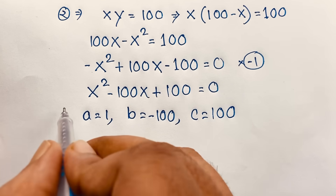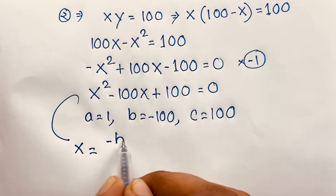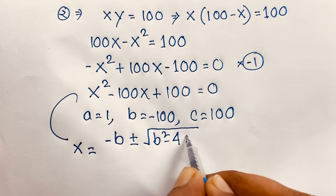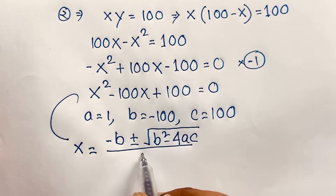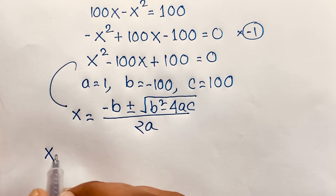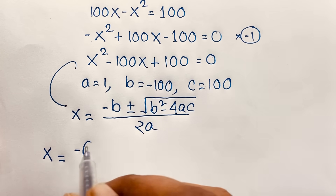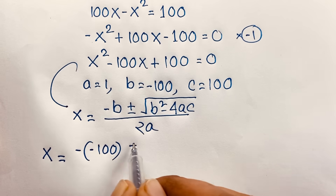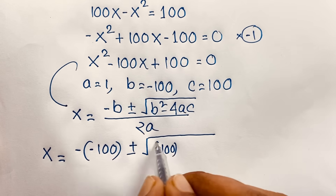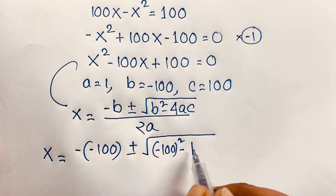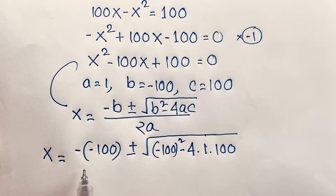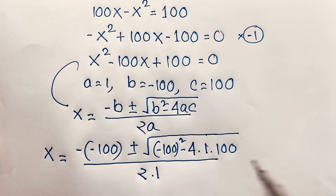Now, x equals minus b plus or minus square root of b squared minus 4ac, over 2a. So I apply this quadratic formula. x is equal to minus b — b is minus 100 — plus or minus square root of b squared, so b is minus 100 bracket power 2, minus 4ac: a is 1 and c is 100, over 2a, which is 2 times 1.